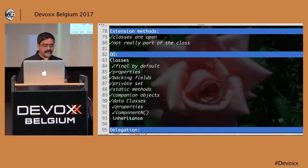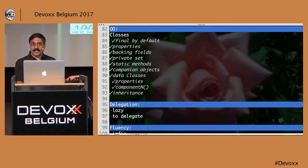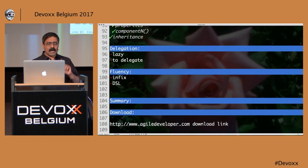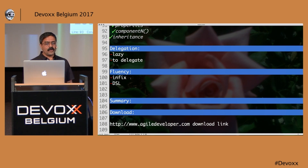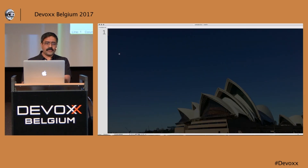Finally, about inheritance — you have to open classes before you can inherit from them. I want to talk about two very interesting features before we're done in the next six minutes. I want to show you a little bit about laziness.